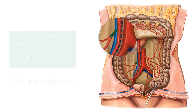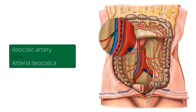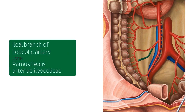The superior mesenteric artery has three main branches that are involved in the blood supply to the large intestine: the ileocolic artery, the right colic artery and the middle colic artery. This artery branching off the right side of the superior mesenteric artery is the ileocolic artery. As the name suggests, this artery supplies both the ileum and the large intestine. The ileocolic artery has an ileal branch and a colic branch — the ileal branch, which we can see here, supplies the ileum.